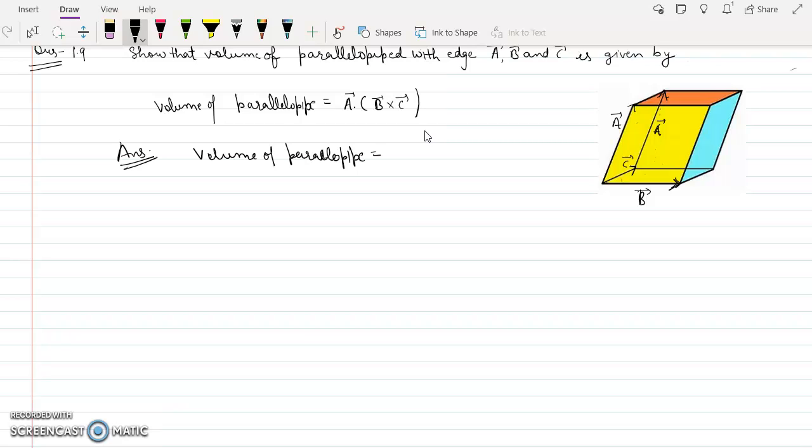As we know that volume of parallelepiped is area of surface multiplied by height, that is perpendicular distance between the two edges.